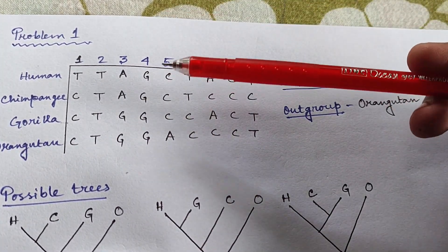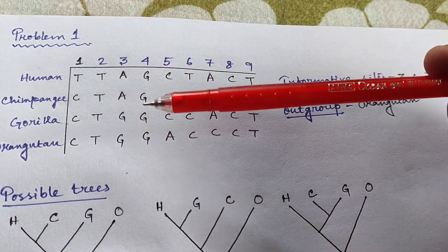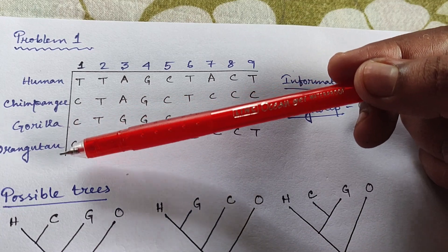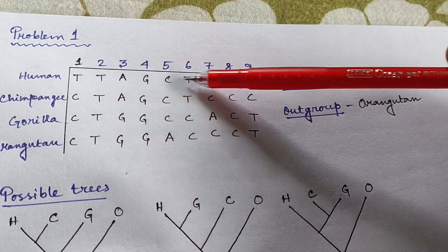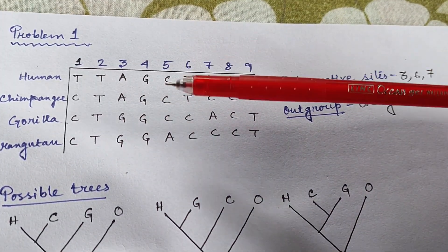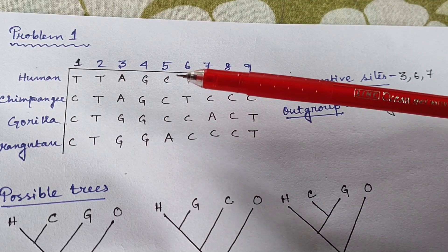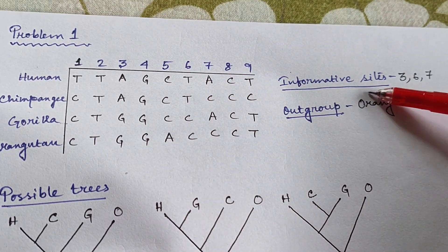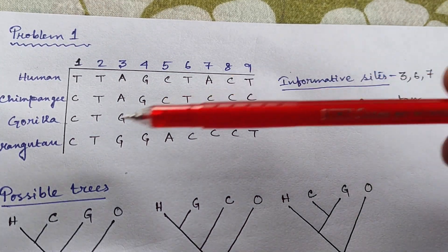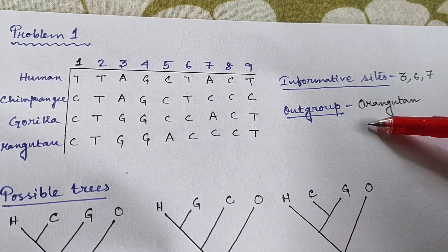Now let's apply this to a real problem. Here we have the MSA of four taxa: human, chimpanzee, gorilla, and orangutan — nine characters in total. These are the sequences of each character or site. First, the sequences are already aligned. From evolutionary studies we know that orangutan originated earlier than the other three, so orangutan will be your outgroup.